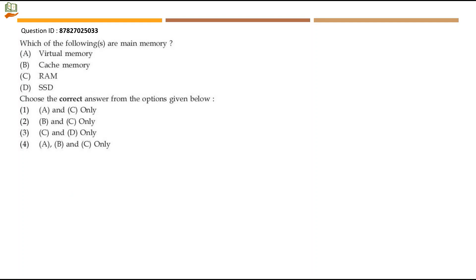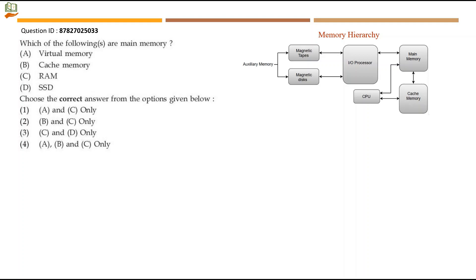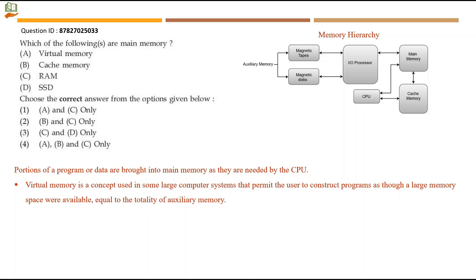Next question: which of the following are main memory? Looking at the memory hierarchy: secondary memory includes magnetic tapes and disks; the CPU connects to main memory and cache. Virtual memory is a concept that permits programs to use address space as large as auxiliary memory — it is not directly main memory. The cache contains a copy of portions of main memory.